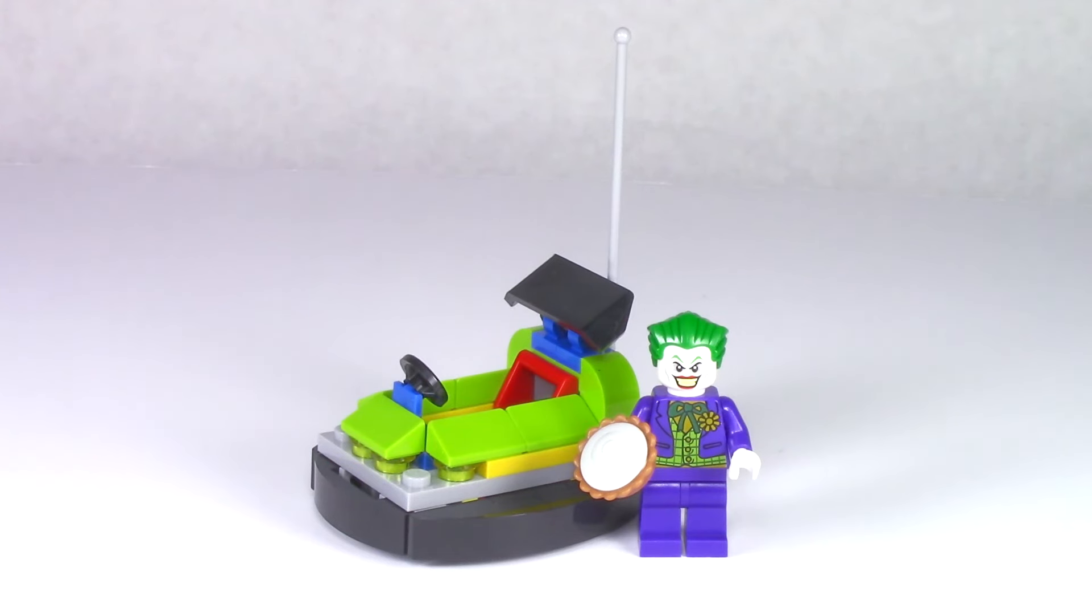And here we have everything back together for my final thoughts. This is a wonderful polybag, it's the cheapest way ever to get the Joker, and this little bumper car is actually quite a nice little build. Coming off of the Jokerland set, I think it's great to get another amusement themed Joker set. And this bumper car is really fun to roll around. At $3.99 this set is a no-brainer in my opinion, especially if you guys don't have a Joker yet.